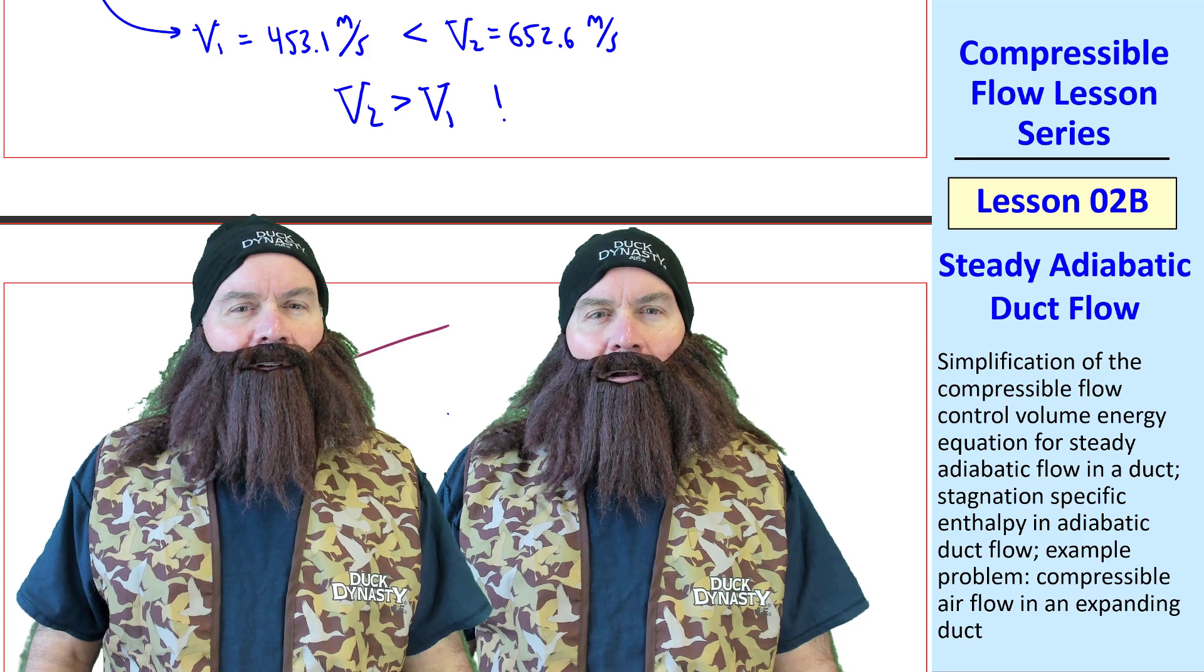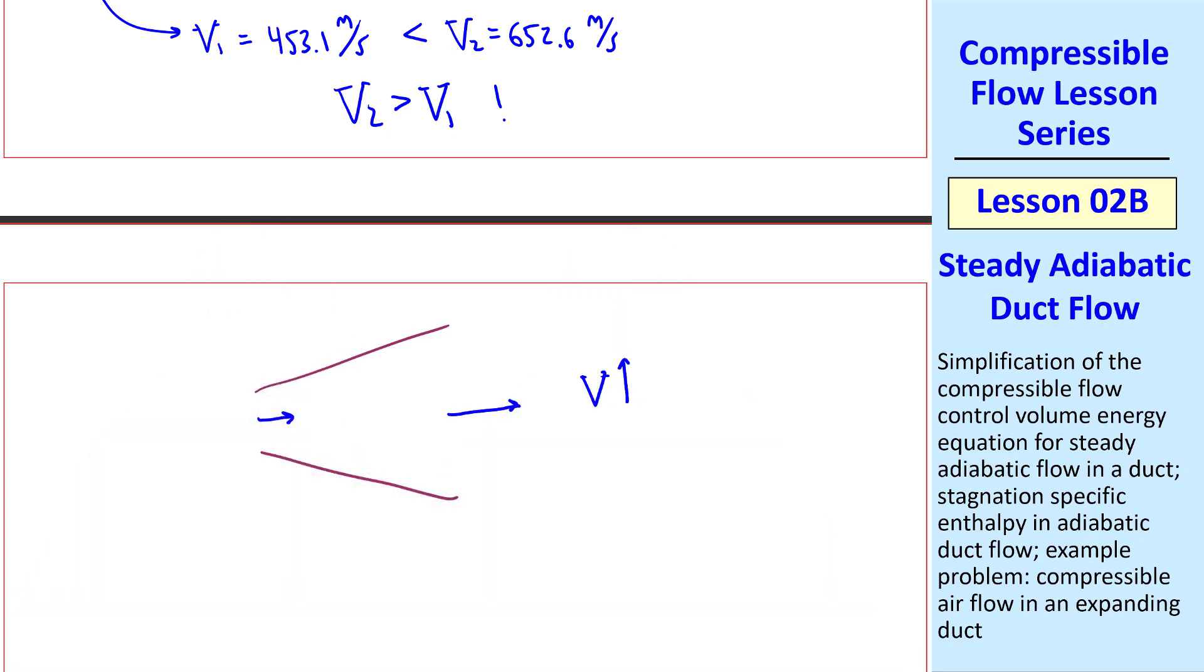Right, Duck and Dick. We have an expanding duct, but V goes up as area goes up. This is not what we're used to with incompressible flow. But it turns out, as we'll show in later lessons, that this is a sure indication that this flow is supersonic.